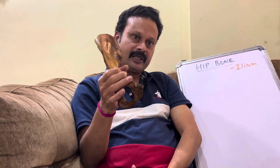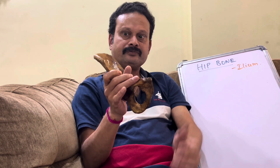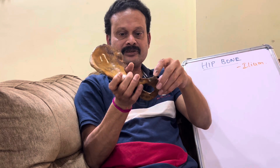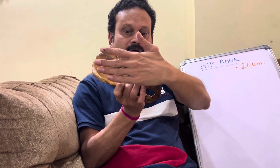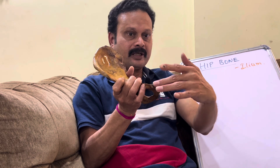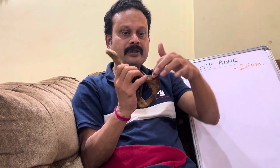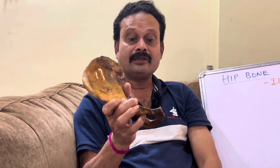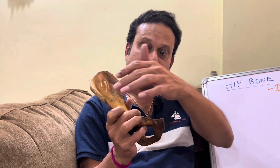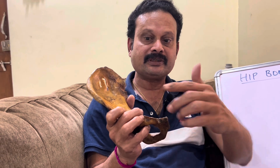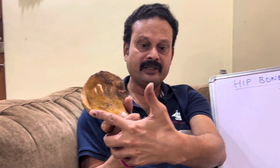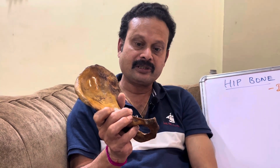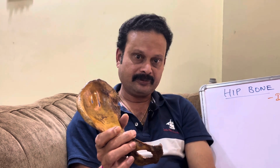This belongs to the right side. To keep it in anatomical position, the anterior superior iliac spine and pubic symphysis should lie in the same coronal plane along with the pubic tubercle, while the ischial spine should lie in the same horizontal plane.